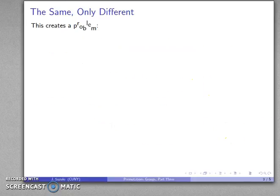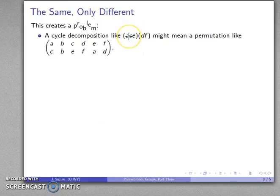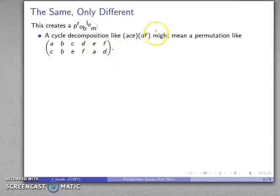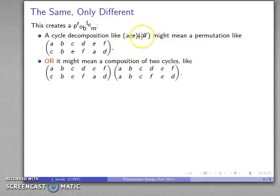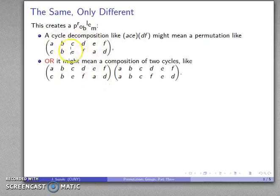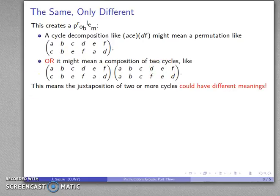And this creates a big problem with our notation. If I write a cycle decomposition like (A C E)(D F), what this might mean is it might mean a single permutation that's been decomposed into two cycles. But maybe I'm juxtaposing two cycles — this might mean the composition of two cycles. So this cycle (D F) looks like this, and maybe I apply this permutation first, and then this cycle (A C E) is applied second. Do I mean a decomposition, or do I mean a composition? This is very bad, because it means that a juxtaposition of two cycles could mean two very different things.